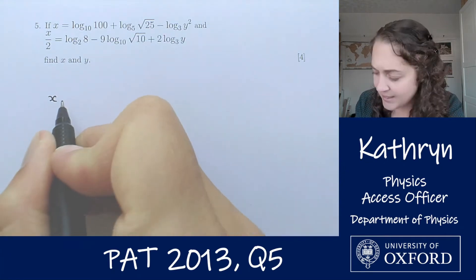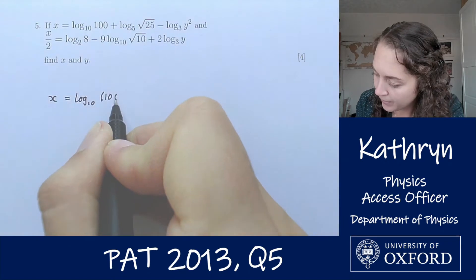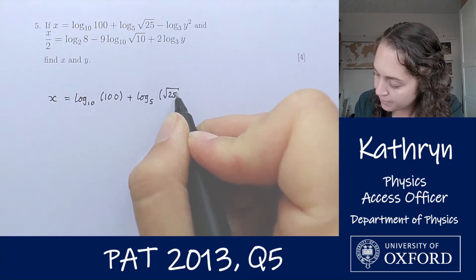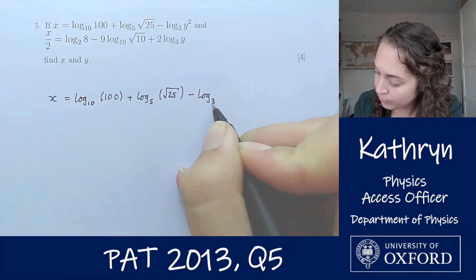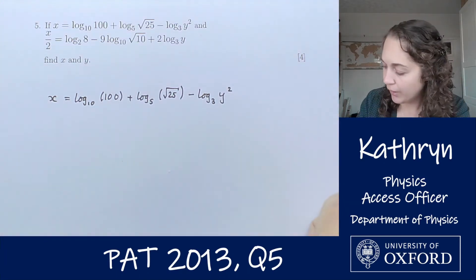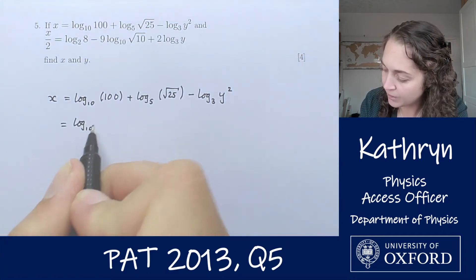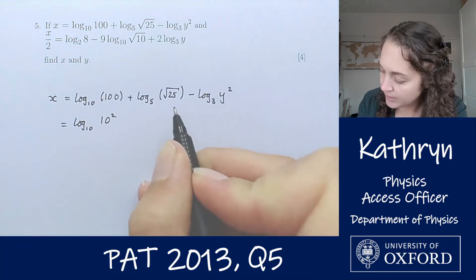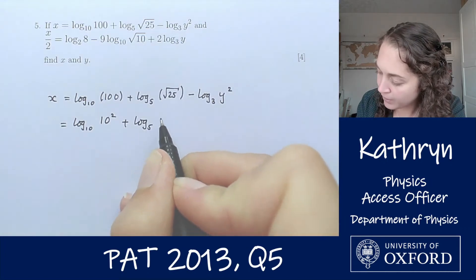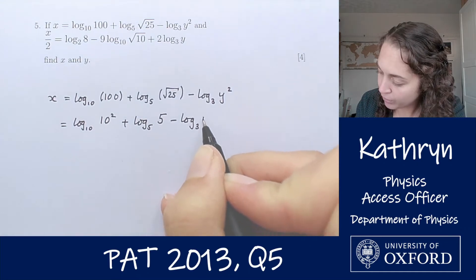We've got x equals log base 10 of 100 plus log base 5 of square root of 25 minus log base 3 of y squared. 100 is 10 squared, so we've got log base 10 of 10 squared, square root of 25 is 5, so log base 5 of 5, and then we've got minus log base 3 of y squared.